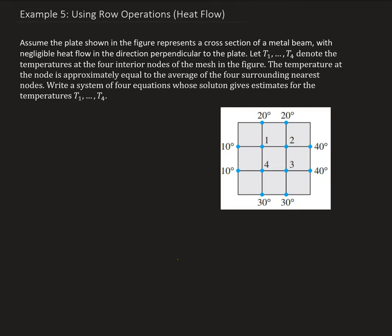Let's obtain the equation for the temperature at node 1. Looking at node 1, there are four surrounding points — a couple of boundary points and a couple of interior points. So for T1, we take the average of the four closest surrounding points: T1 = one-fourth of (20 + 10 + T4 + T2).